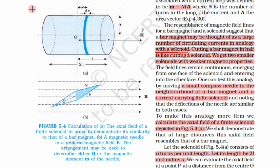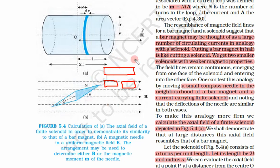The second similarity: the pattern of magnetic field lines is similar. Also, when cutting a bar magnet in half, the magnetism of the bar is weakened — we get two smaller magnets. For example, if the original magnetism is 250 gauss, the two smaller pieces would each have weaker than 250 gauss. Similarly, if we cut this solenoid into two pieces, we get two smaller solenoids with weaker magnetic properties. This is the third similarity.